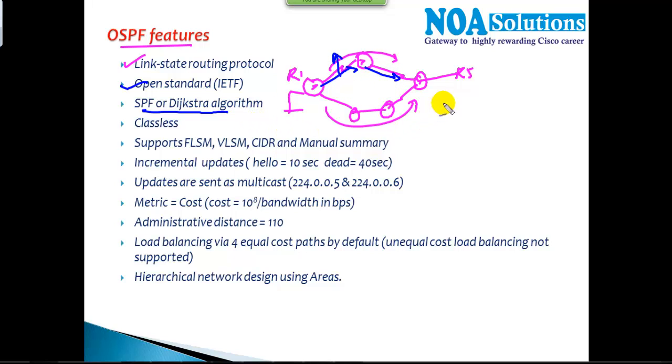The metric calculation uses 10 to the power of 8 divided by bandwidth—that's the formula used by OSPF to find the shortest path. Whichever route is having the least cost, that route will be considered as the best route.